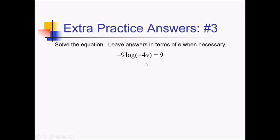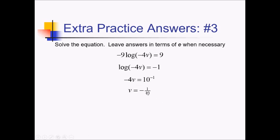To make our lives a little bit easier on this problem, I'm going to start by dividing both sides by negative 9. That gives me negative 1 on the right side. Now to get rid of this log, I have to raise the base to both sides of the equation. The base here is an invisible 10 — if you don't see a base, it's assumed that we have base 10. So raising 10 to both sides, that leaves me with just negative 4v on the left side and 10 to the negative 1 on the right side. This is really 1 over 10. If I divide both sides by negative 4, that's going to be negative 1 over 40.